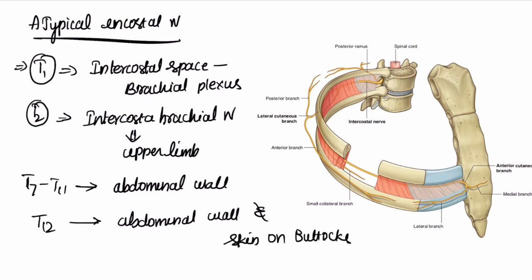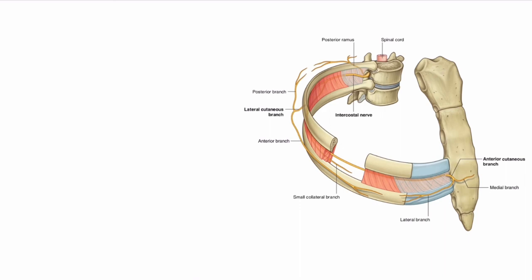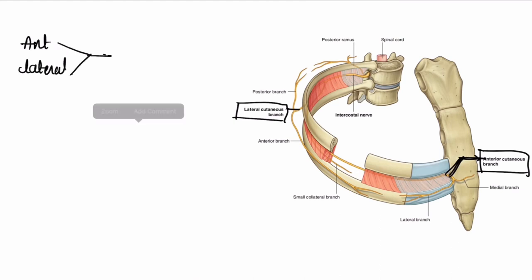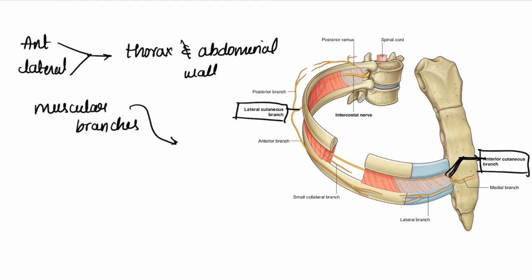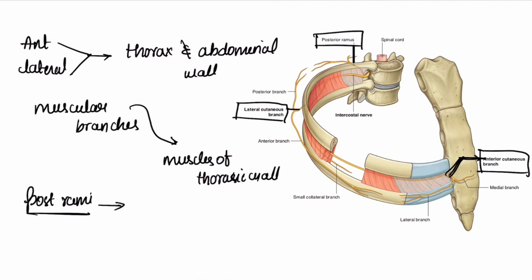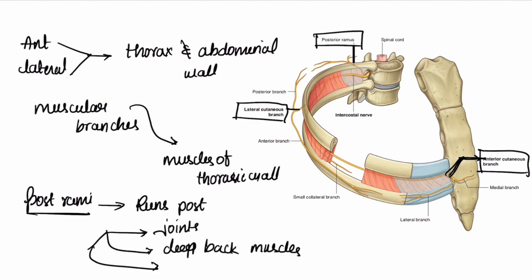These intercostal nerves give rise to the lateral cutaneous branch and also the anterior cutaneous branch. The anterior and lateral cutaneous branches supply to the thorax and abdominal walls. They also give rise to muscular branches as they supply to the muscles of the thoracic wall. They also give rise to the posterior ramus, which runs posteriorly and supplies to joints, deep back muscles, and the skin of the posterior thoracic region.